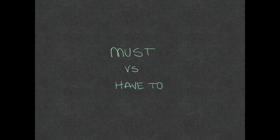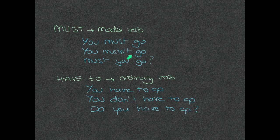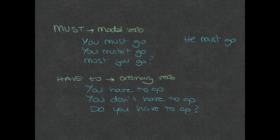Do you really know the difference between 'must' and 'have to'? To begin with, the main difference is that 'must' is a modal verb, whereas 'have to' is an ordinary lexical verb followed by an infinitive with 'to'. As a modal verb, when you use 'must' in the affirmative you say 'you must go' — a bare infinitive. In the negative you say 'you mustn't go', and in a question 'must you go?' Modal verbs don't need anything else. If talking about he or she, you say 'he must go'.